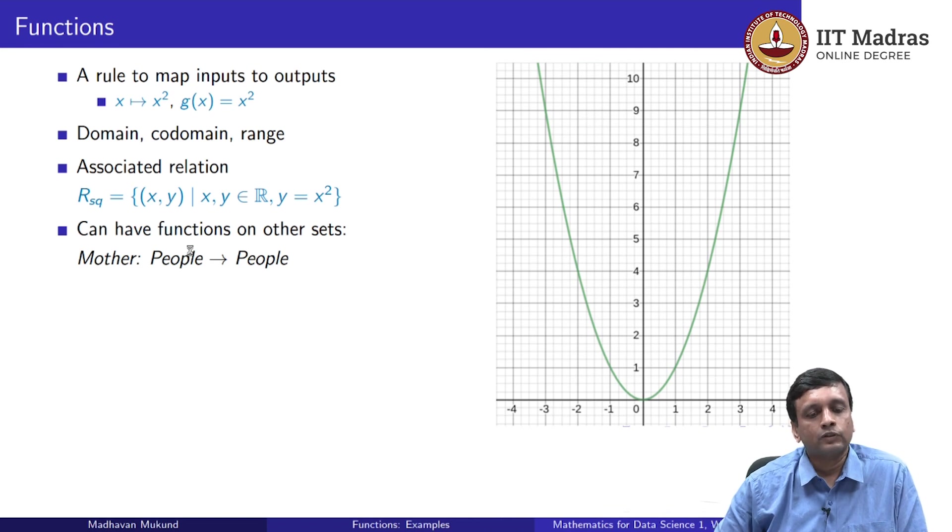Now, we are not restricted to looking at functions on numbers, we can also look at functions on other sets. So for instance, if we look at the set of all people in the universe, in the world, in the country, in any range of geographical regions, we can look for the function mother which says, given a person, this will map the person uniquely to the mother of that person. So this is a function because every person has one mother.